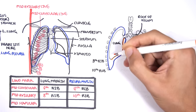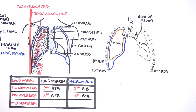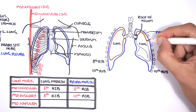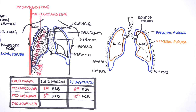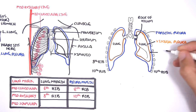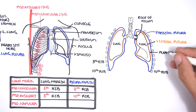The visceral pleura in orange essentially adheres to the lungs. At the root of the hilum, the parietal pleura goes and attaches to the thoracic wall, and at the root of the hilum it changes into the visceral pleura which envelopes the lungs. So the visceral pleura and the parietal pleura meet at the root of the hilum, and the pleura itself is a continuous serous membrane — more like a sac where the lungs actually sit. Because it is a sac, in between the parietal and visceral pleura you have the pleural cavity or the pleural space.